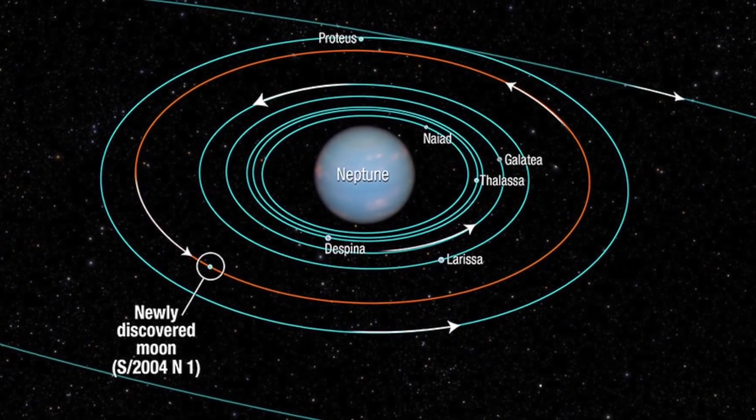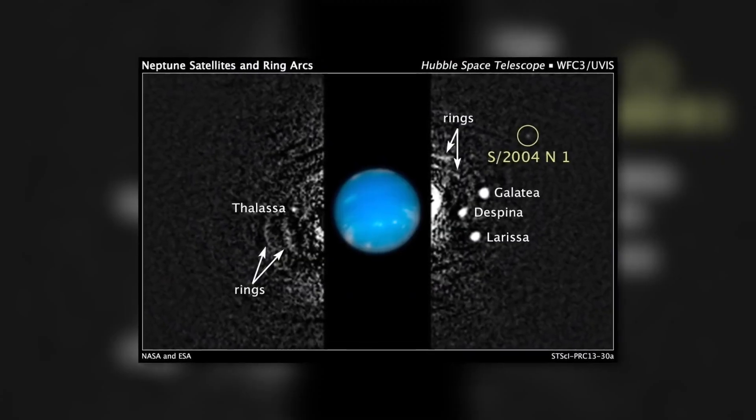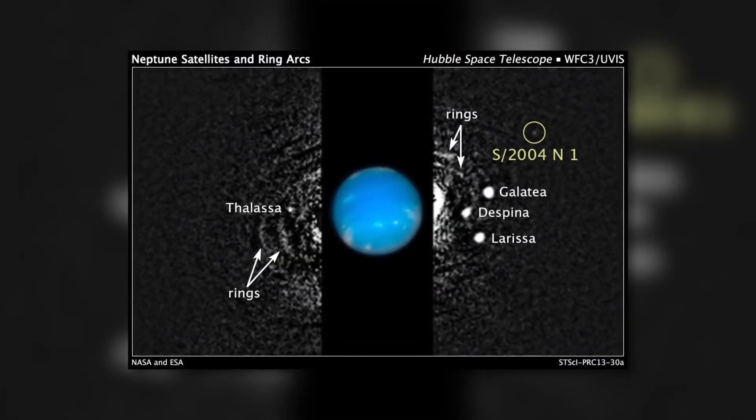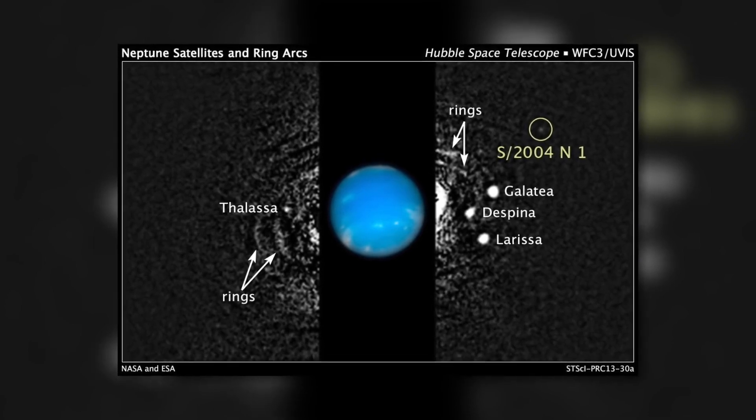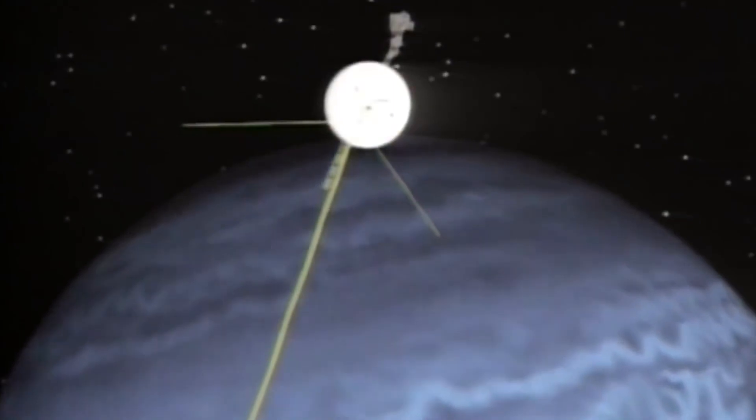Neptune appears distant because it is 30 times farther away from the Sun than Earth is from our star. However, compared to the billions of light years away galaxies and stars that the James Webb Telescope is made to explore, this is a cosmic stone's throw.